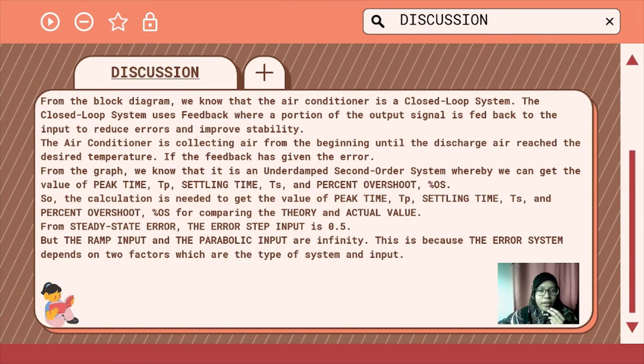In this discussion, from the block diagram we know that the air conditioner is a closed loop system. The closed loop system uses feedback where a portion of the output signal is fed back to the input to reduce errors and improve stability. The air conditioner is collecting air from the beginning until the discharge air reaches the desired temperature. From the graph we know that it is an under-damped second order system whereby we can get the value of peak time, settling time, and percent overshoot. So the calculation is needed to get the value of peak time, settling time, and percent overshoot for comparing the theory and actual value. From steady state error, the error step input is 0.5 but the ramp input and the parabolic input are infinity. This is because the error system depends on two factors which are the types of system and input.